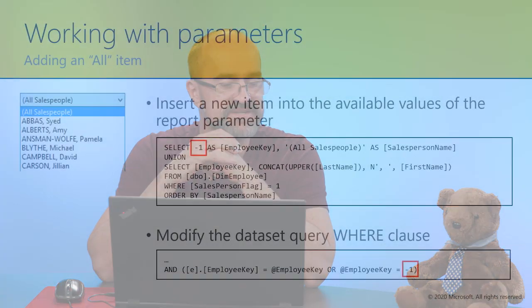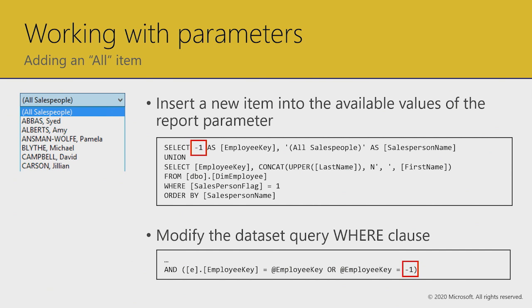Let's start with the all item. Sometimes we want all salespeople, and other times we want a single salesperson. The available values are sourced from a query — specifically a union of two select statements. The first select statement introduces an artificial key: minus one doesn't really exist in the employee table, but we add it and give it a label of 'all sales people,' then union it with the query returning all salespeople. That's step one.